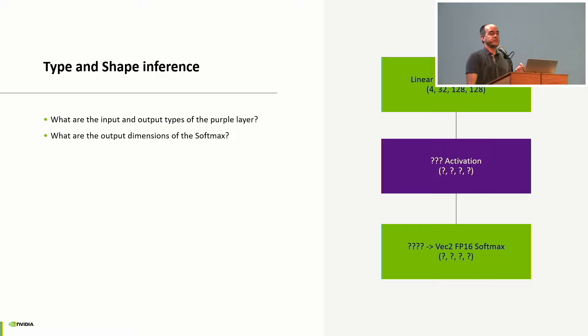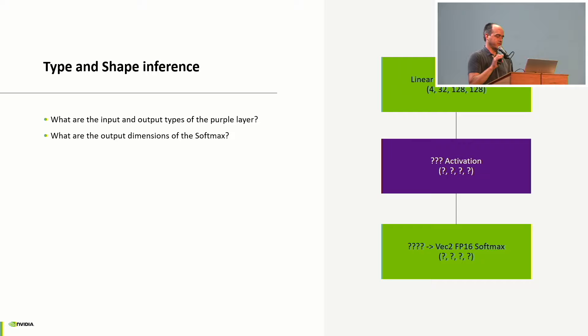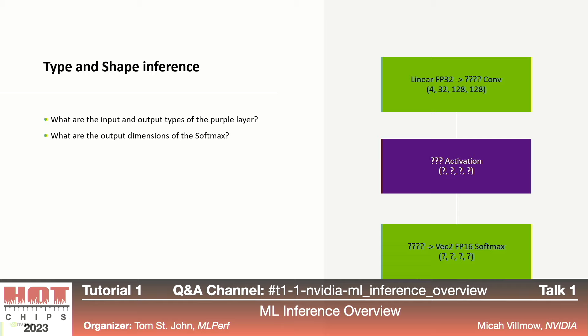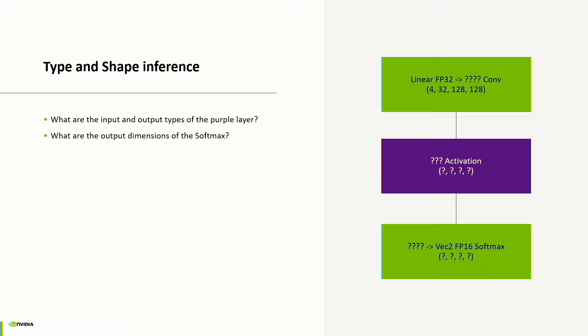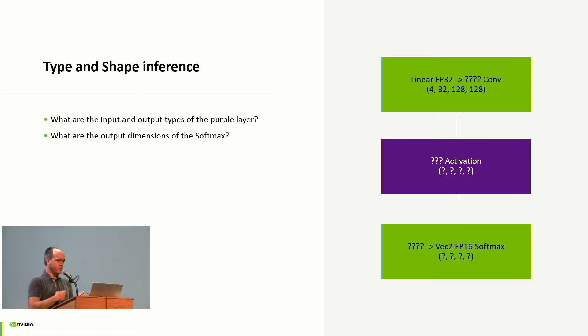Next is type and shape inference. You know your data types, you have your tensors, and you need to figure out — as an inference optimizer — what the output type of a convolution should be. The input type might be linear FP32 in NCHW format, but the output type can be whatever is optimal for your hardware. Determining the output type of the convolution determines the input type of the activation, which feeds into the softmax, and the output type of the softmax might be VEC2FP16. What you select determines the performance you'll see on hardware.